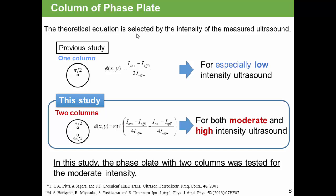I will explain the columns of phase plate. We selected the theoretical equation of phase contrast method by the intensity of measured ultrasound. In previous study, phase plate with one column was used for especially low-intensity ultrasound. On the other hand, in this study, phase plate with two columns was used. We can use this equation for both moderate and high-intensity ultrasound. In this study, the phase plate with two columns was tested for the moderate intensity.